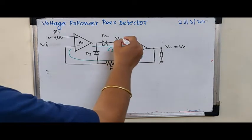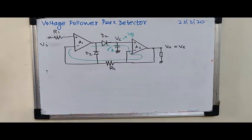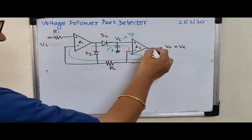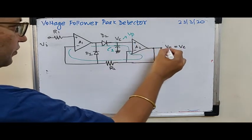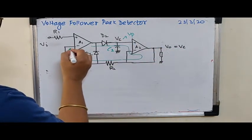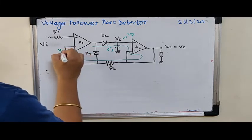Vc remains at Vp. This Vc remains at Vp itself. Inverting terminal of A1 also remains at Vp. So inverting terminal, because this is the voltage follower circuit, whatever is the voltage over here is the voltage at the output, and the same voltage you can see is fed back over here like this.